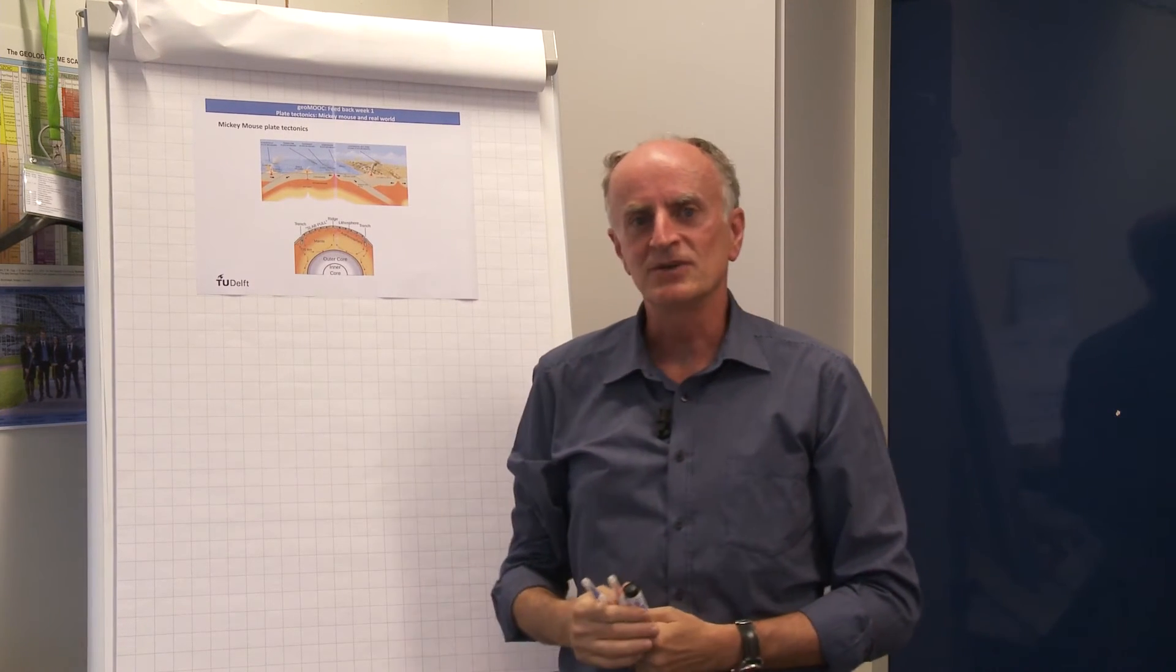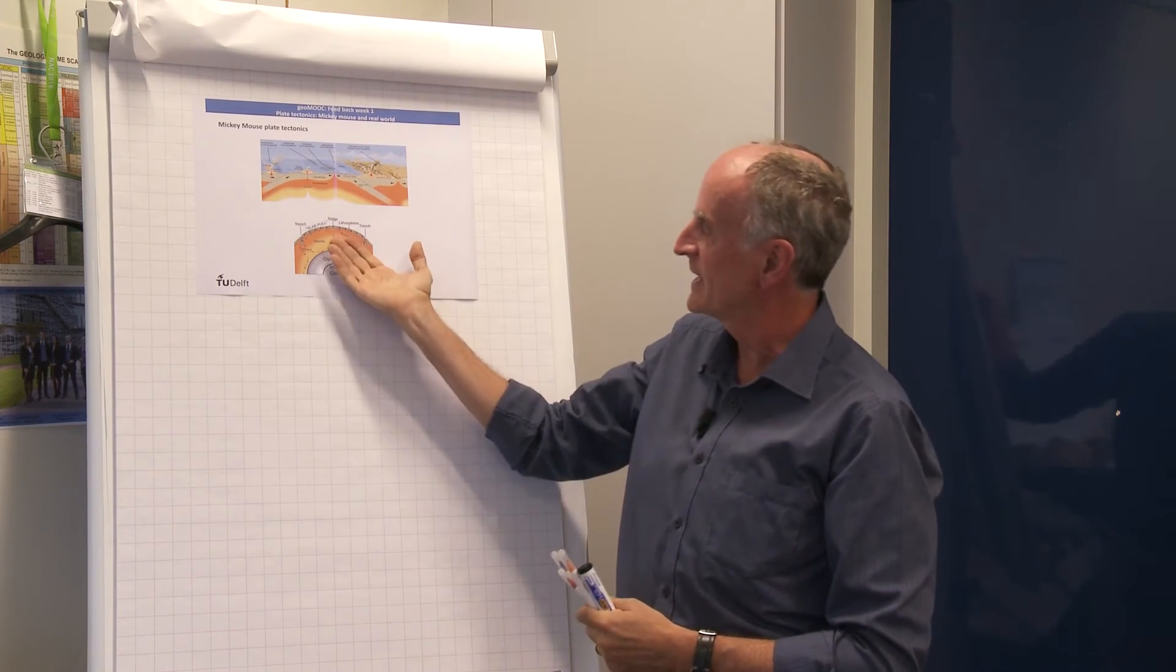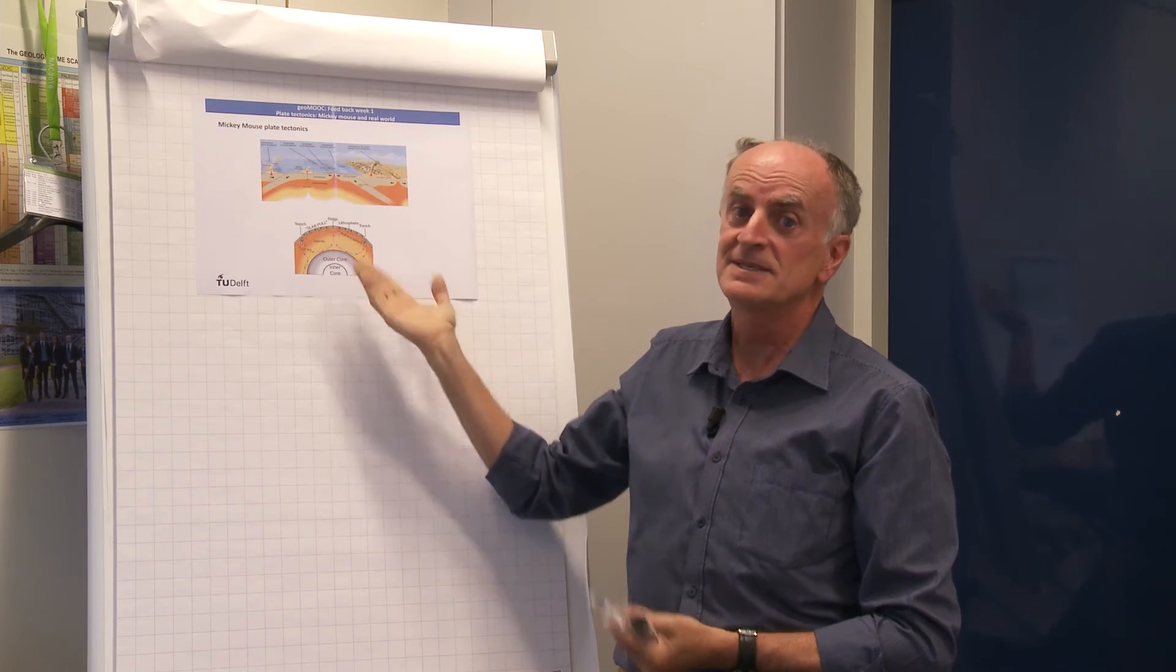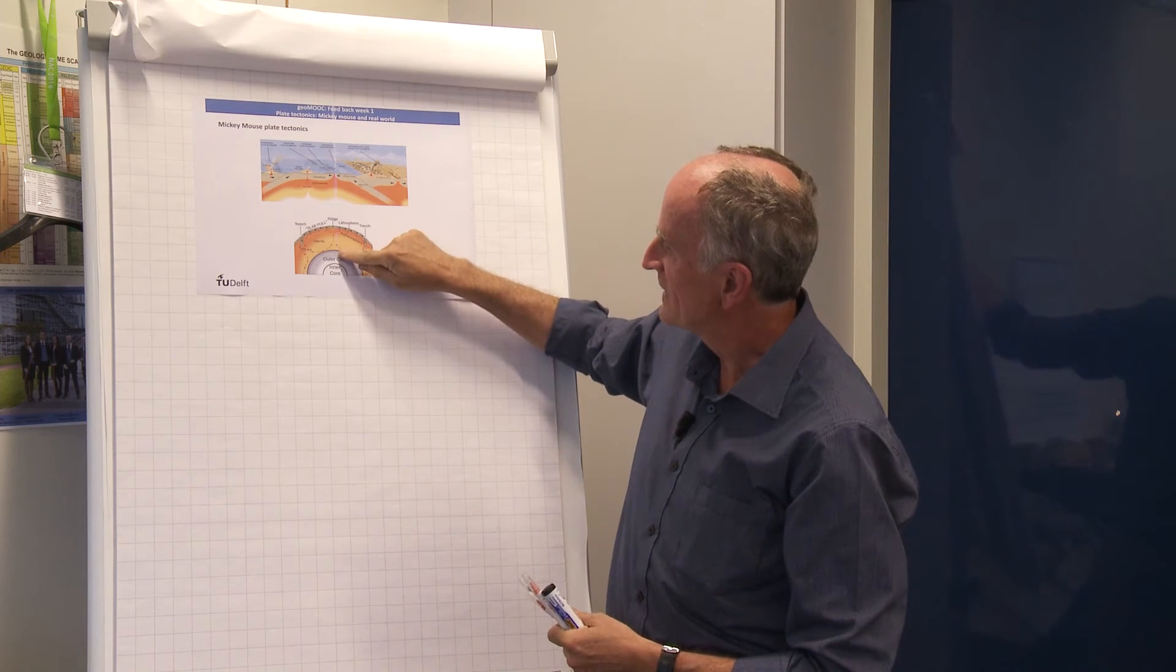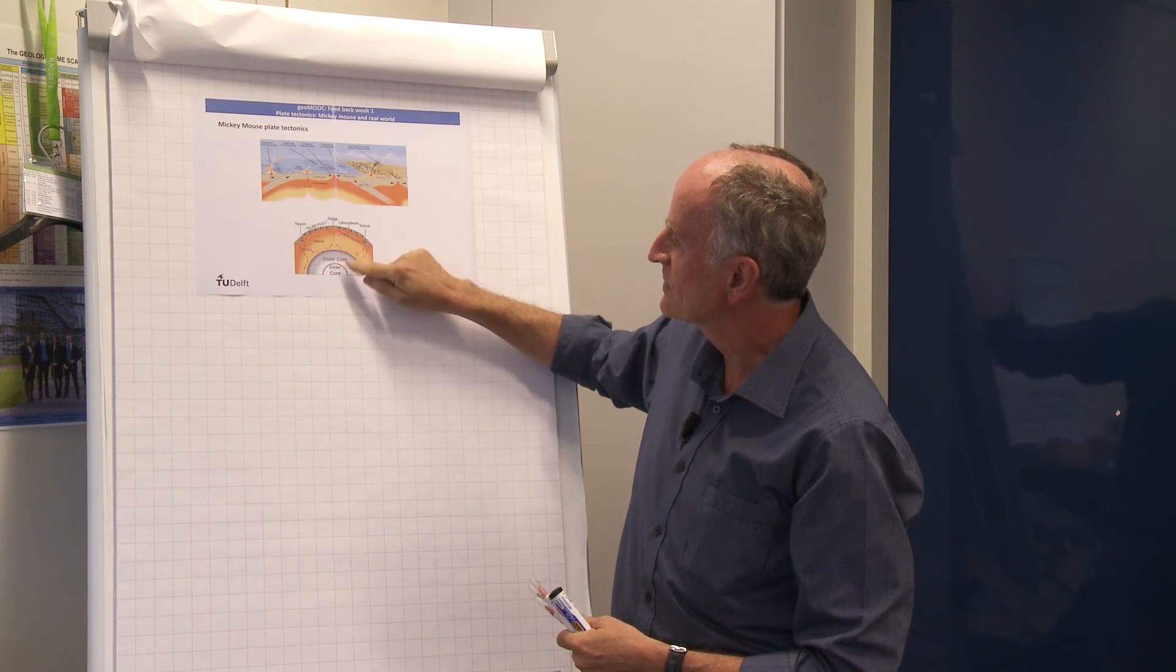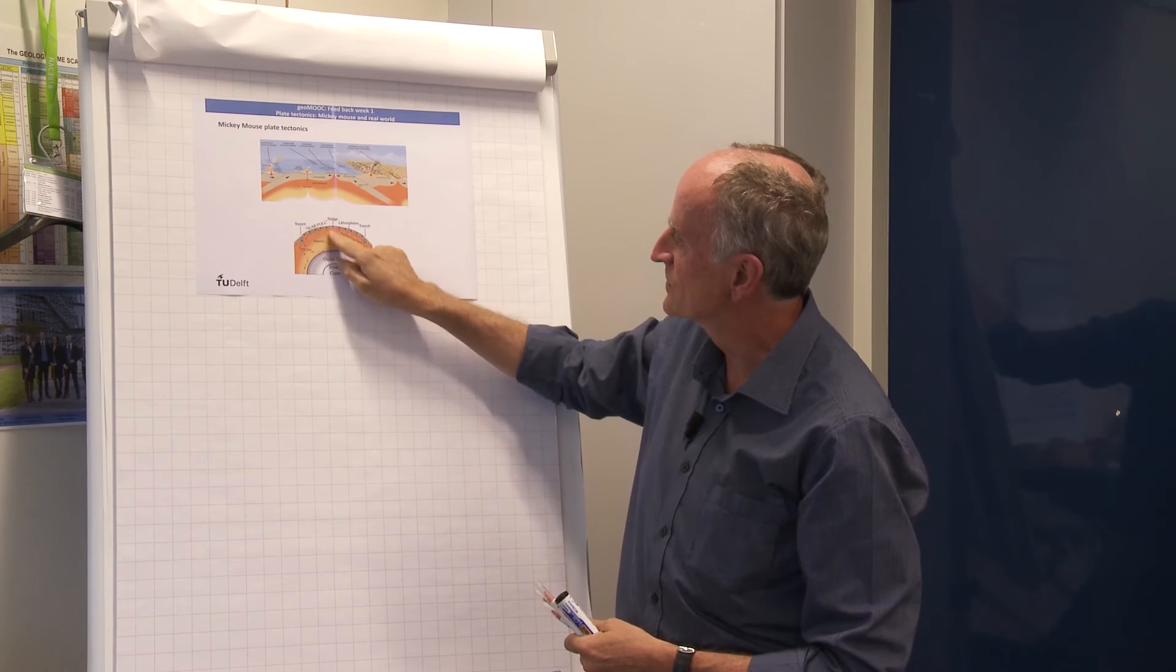The last point I want to mention is plate tectonics. This is the kind of scheme we have been using, and this is the scheme which you see in newspapers or in the media. It is characterized by the fact that we create oceanic crust here in the ridge, then the oceanic crust moves to the side, and the system goes down into the subduction zone.